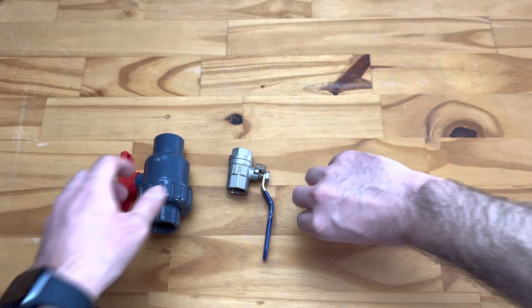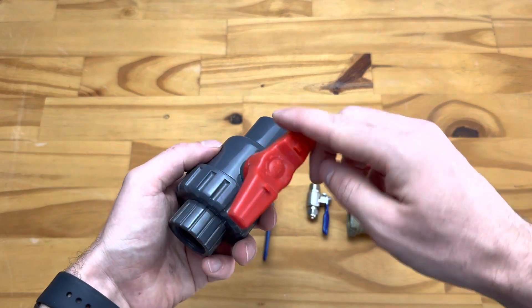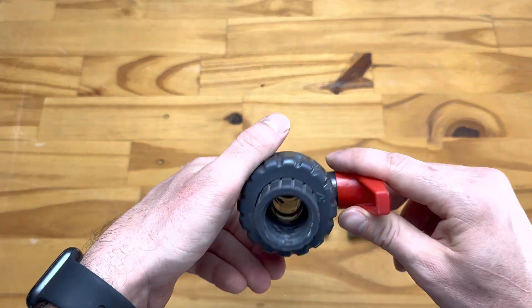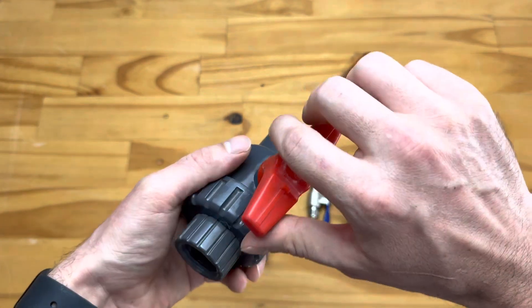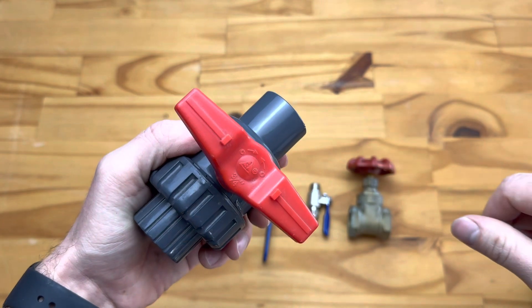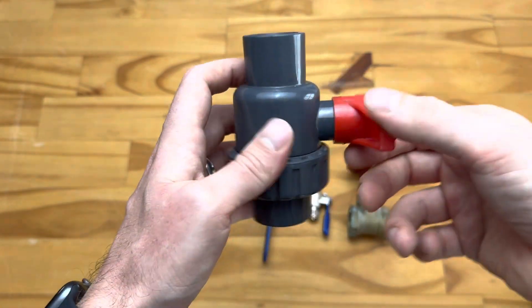And on the other side we have something like this which is a PVC valve. This is a plastic valve. Also works in very much the same way. If the handle is in the direction of your flow or the direction of your pipe, it's open. Turn it 90 degrees and you'll find that it's closed.